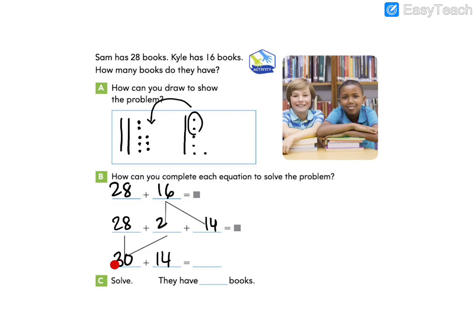I know that one 10 greater than 30 is 40. And four ones greater than 40 is 44. So in total they have 44 books.